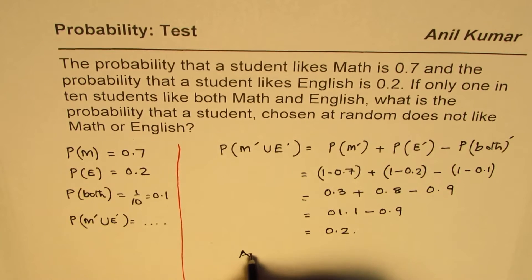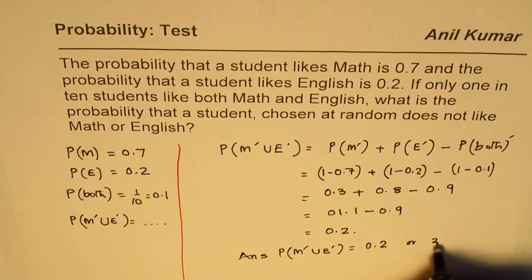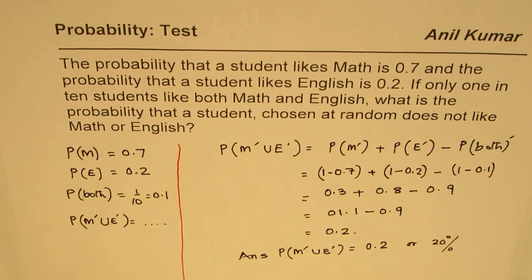So our answer is probability that a student does not like math or English in this given scenario is 20%, 0.2 or you can write 20%. So that is how such questions can be solved. I hope the method is clear and you understand this along with the concept of inclusion and exclusion.